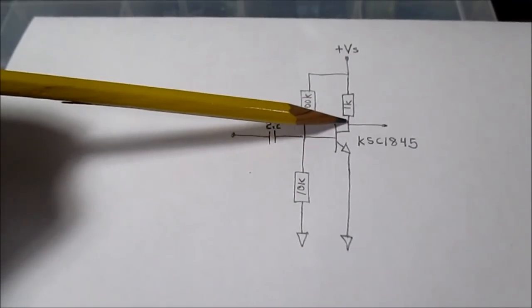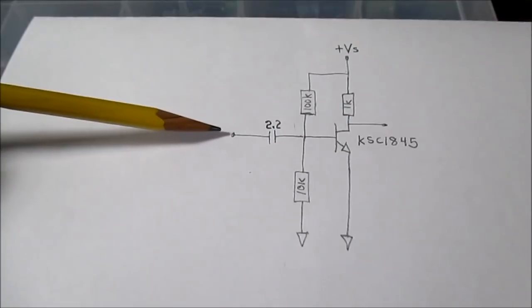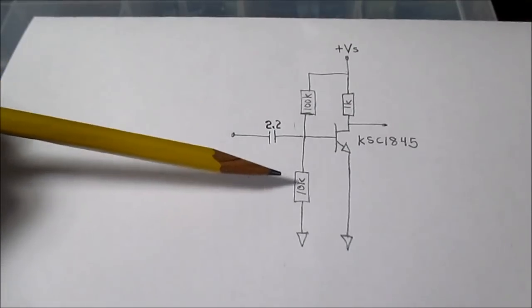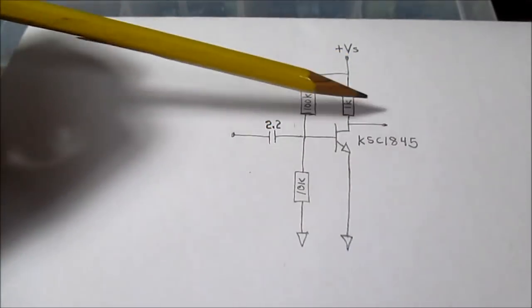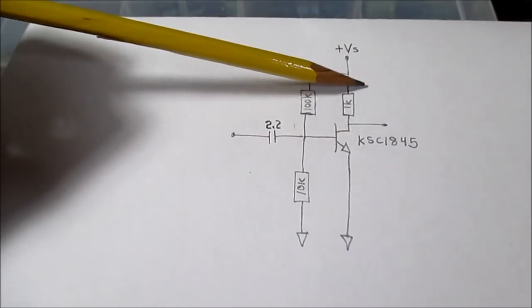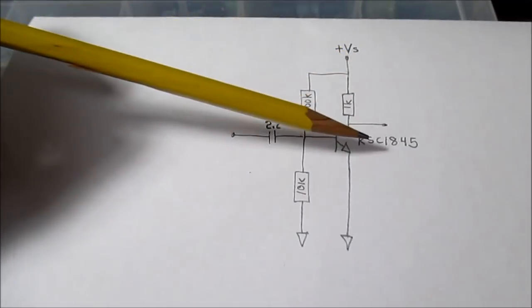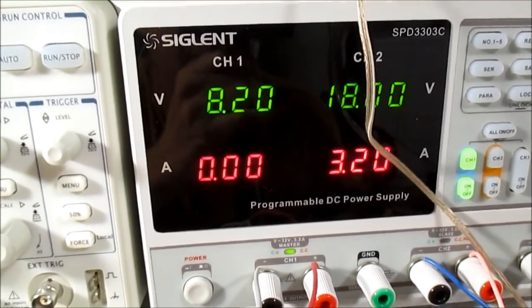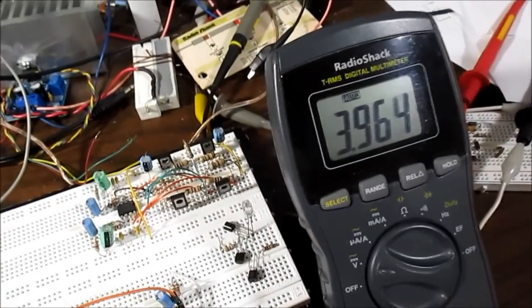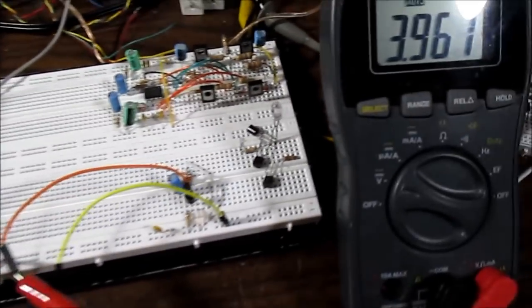What I want to do is set the collector voltage here to be about one half the supply voltage. The reason for that is when I put a signal on the input, it's going to swing positive and swing negative. I want the output to be able to swing up and down without clipping. If I had this bias wrong and it was too close to the positive rail, it would clip on that positive rail first. You want to have it about half the supply voltage. I have the power supply set up to 8.2 volts and the collector voltage is around 4 volts. So it's roughly half the supply voltage.